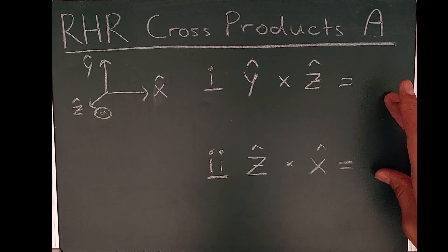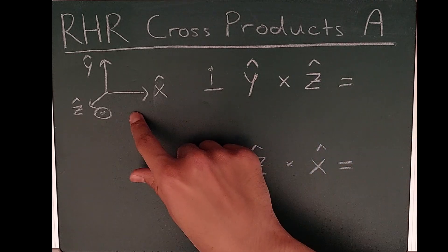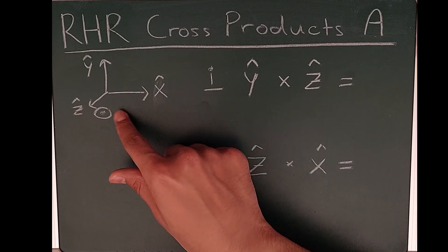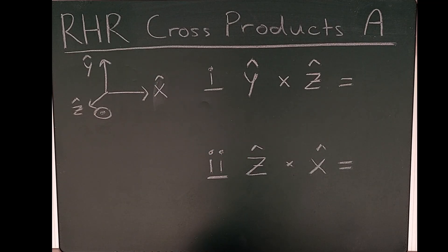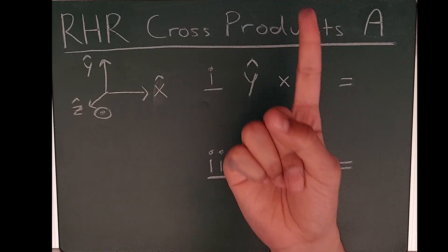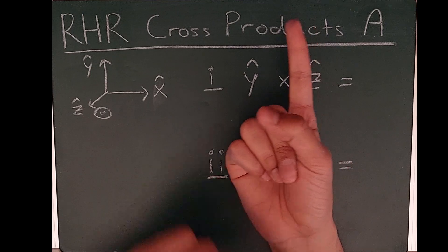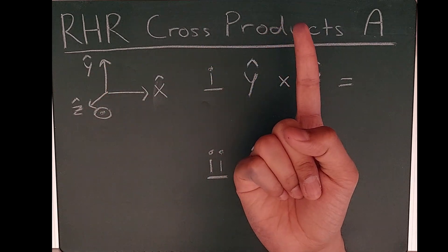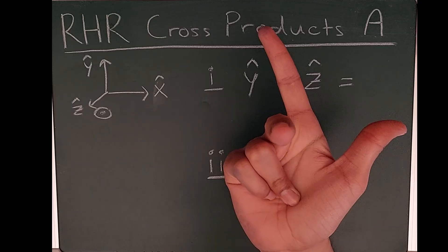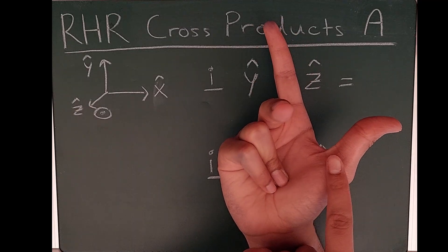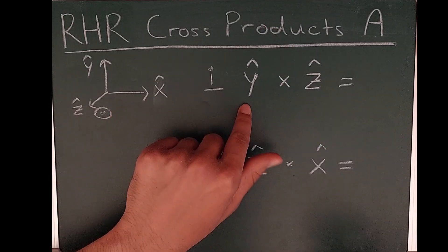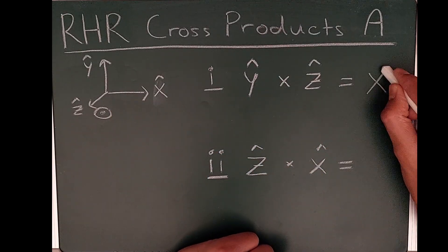I have a coordinate system with X hat pointing to the right, Y hat pointing north, and Z hat coming out of the page. The first cross product is Y hat cross Z hat. I point my index finger up in the direction of Y hat, then point my middle finger out of the page in the direction of Z hat. Sticking my thumb out, it points to the right — in the direction of X hat. So Y hat cross Z hat equals X hat.